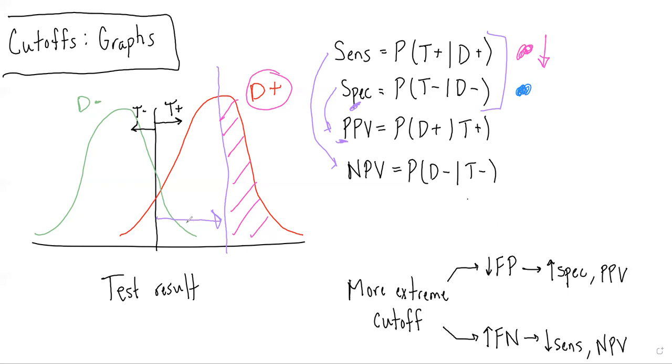we can see that now with this cutoff pushed all the way to the right, the entire area of the disease negative curve is actually to the left of this new cutoff, and therefore specificity has gone up.